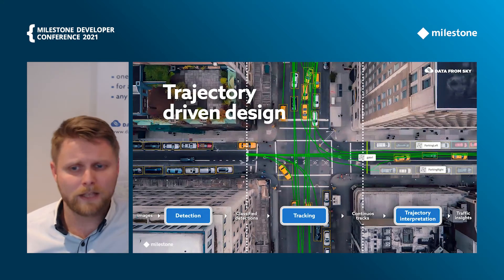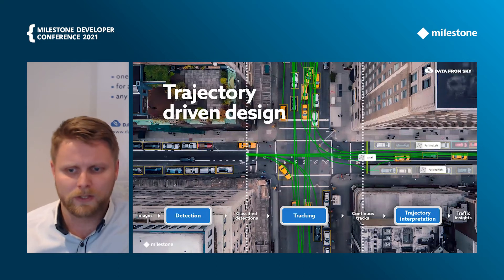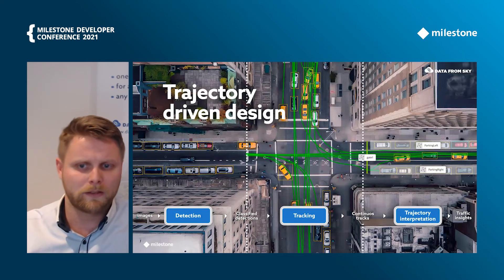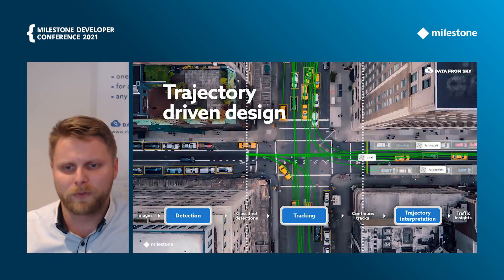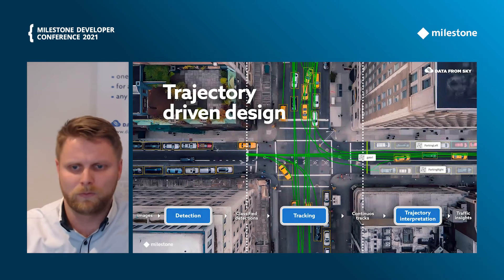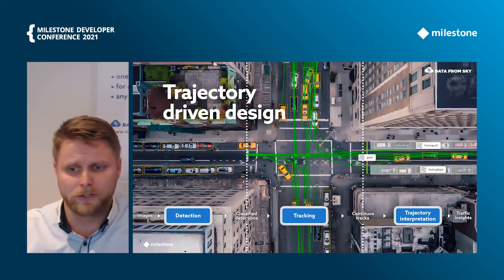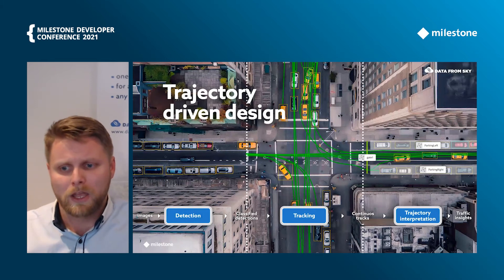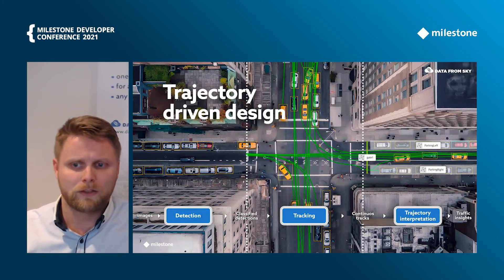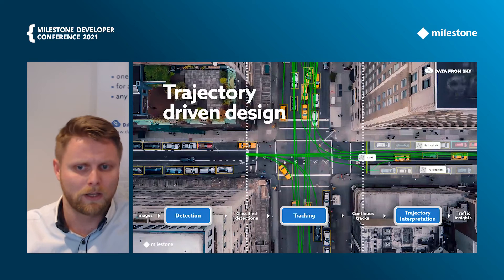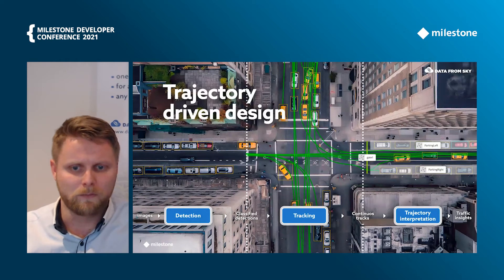In the last step we interpret those trajectories and give them meaning. We create different types of filters — gates, zones, category filters, time filters, etc. — to get actual traffic insights and derive meaning out of the data.